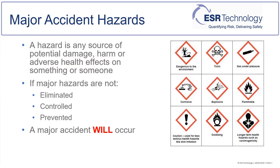If major hazards cannot be eliminated by using inherently safe processes, then if they are not adequately controlled or sufficient prevention measures put in place, major accidents will occur. The following case studies illustrate why understanding major accident hazards is important.